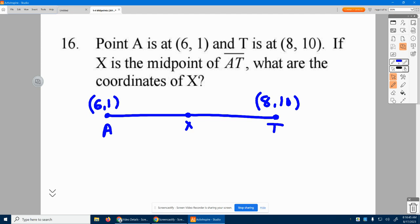So to find the midpoint, I'm going to add my X's together and divide by 2. I'm going to add my Y's together and divide by 2. So my X's are 6 and 8. So I'm going to do 6 plus 8 divided by 2. My Y's are 1 and 10. 1 plus 10 divided by 2.